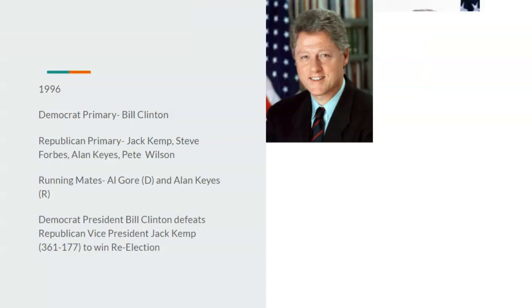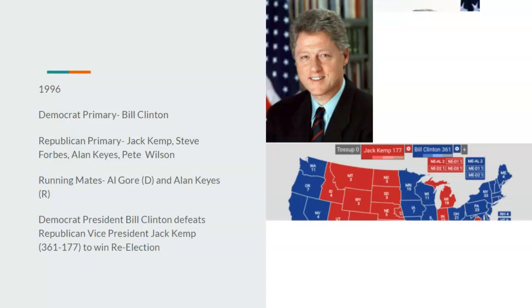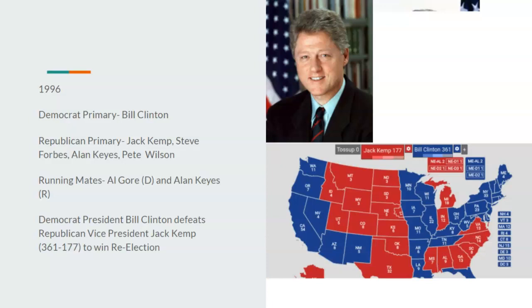In 1996, the economy is doing much better under Clinton. In the Republican primary, former Vice President Jack Kemp faces competition from Steve Forbes, Alan Keyes, and Pete Wilson. Kemp wins the Republican primary and chooses Alan Keyes as his running mate — the first Black vice presidential candidate ever. Democrat President Bill Clinton defeats Republican Vice President Jack Kemp 361 to 171 to win re-election in a landslide. People are happy with jobs and the economy. Also, there are no impeachment hearings for Bill Clinton, as the media is much more liberal in this timeline. Because of Democrat majorities in both houses of Congress, the culture stays very liberal.